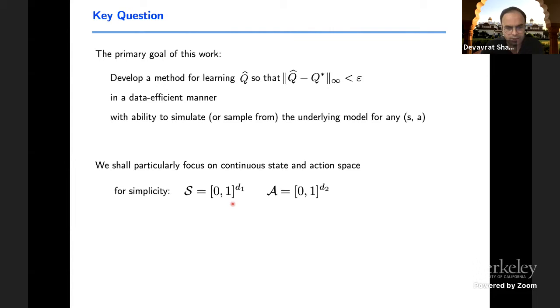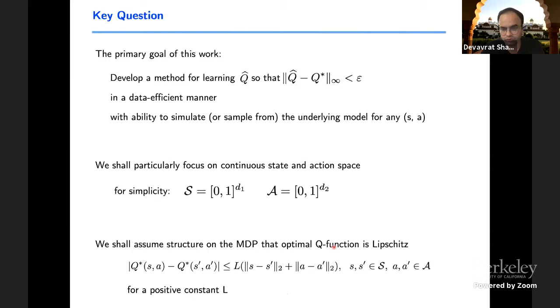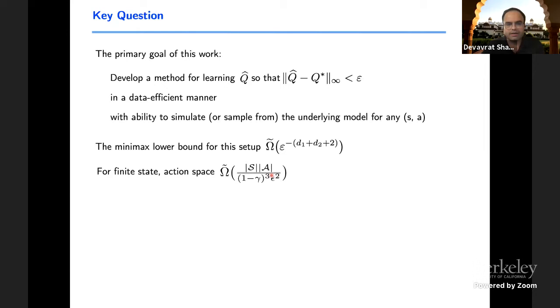I'm going to assume that MDPs have optimal Q function which is Lipschitz defined this way. There are simple generic conditions on the problem setup that will lead to such property on a Q function. Now under such setting, there's a nice minimax lower bound that exists for this problem.